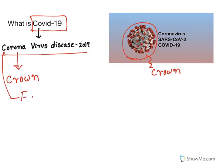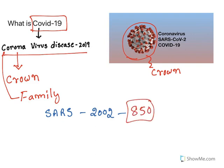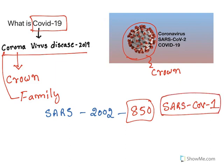In fact, corona is a family of viruses. It has got so many viruses like SARS — severe acute respiratory syndrome. SARS affected mankind in 2002 and resulted in around 850 deaths all over the world. SARS is also named as SARS-CoV-1, meaning it belongs to the coronavirus family and was the first to cause respiratory distress in human beings.